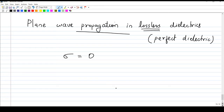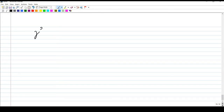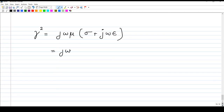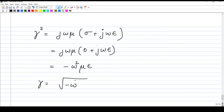Let us start from the expression for propagation constant gamma. We have studied that gamma squared is equal to j omega mu multiplied by sigma plus j omega epsilon — this is the general equation. For lossless dielectric, sigma is zero, so we substitute that: j omega mu into zero plus j omega epsilon simplifies to minus omega squared mu epsilon. Taking the square root, gamma equals j multiplied by omega times the square root of mu epsilon.